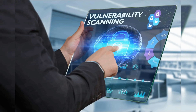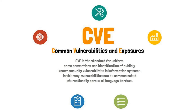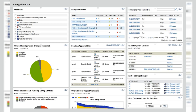Vulnerability scanning is a third way to test your application security. It involves using automated tools to scan your application for known vulnerabilities, such as those listed in the Common Vulnerabilities and Exposures (CVE) database. Vulnerability scanning can be performed on a regular basis to identify new vulnerabilities that may have been introduced since the last scan.